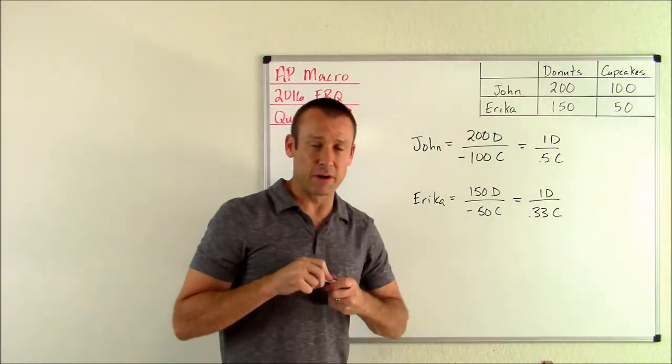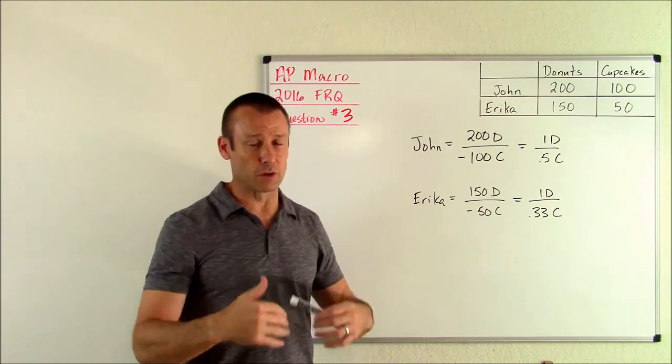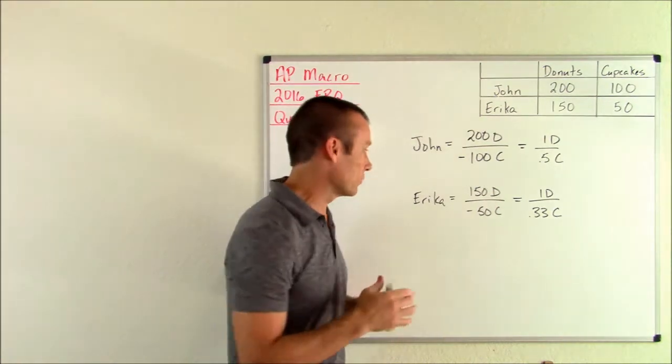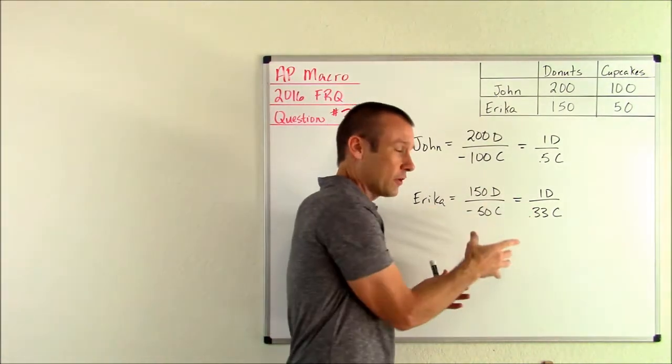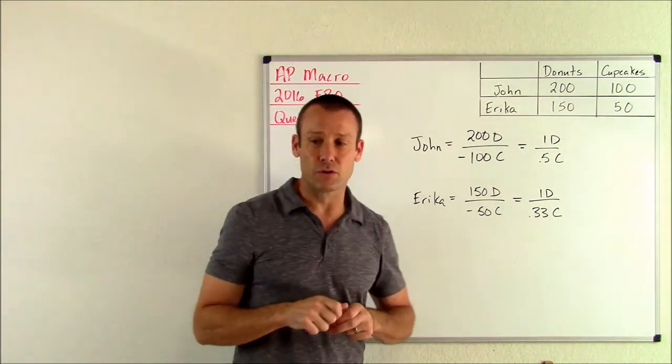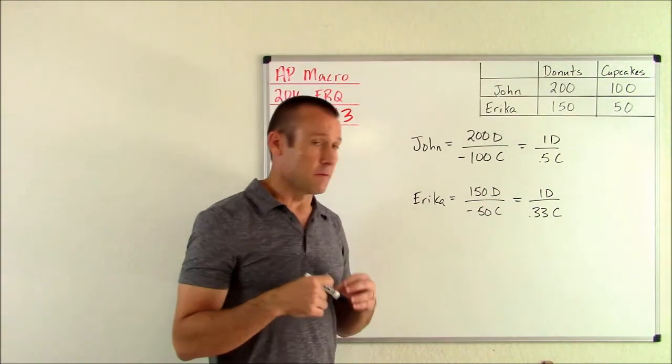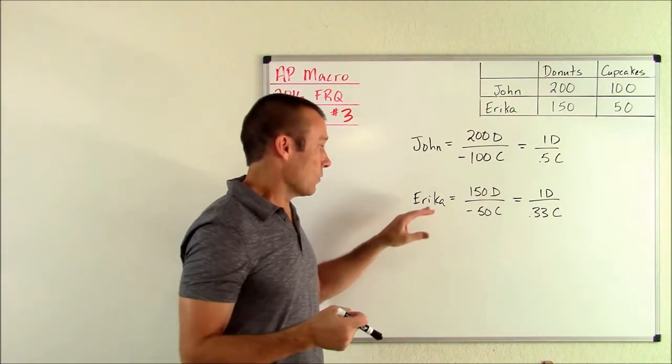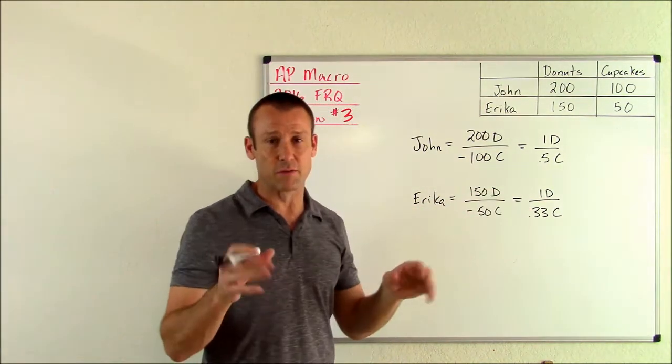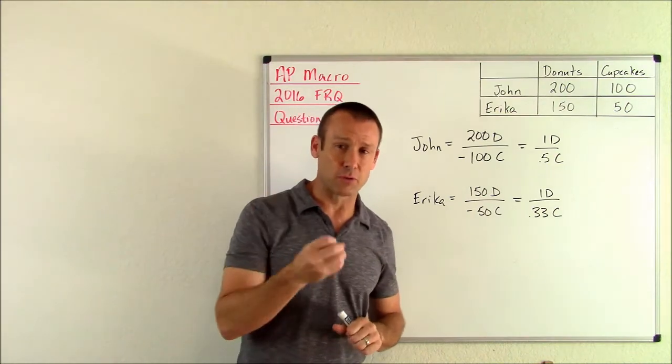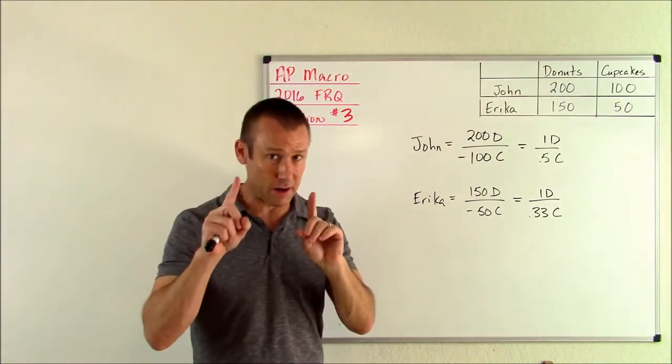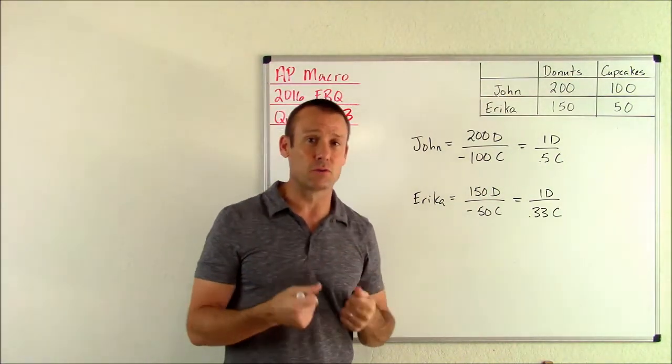Who has the comparative advantage? It's the one with the lowest opportunity cost, the one that gives up the least. That's Erica. Erica has it for donuts. When she makes donuts, her cost of making a donut is less than John's cost. The explanation is when Erica makes donuts, her opportunity cost is less than John. You can actually use the numbers, but I'm definitely throwing in that term opportunity cost. Absolute advantage I like to use the word resources. Comparative advantage I definitely want to use the term opportunity cost.